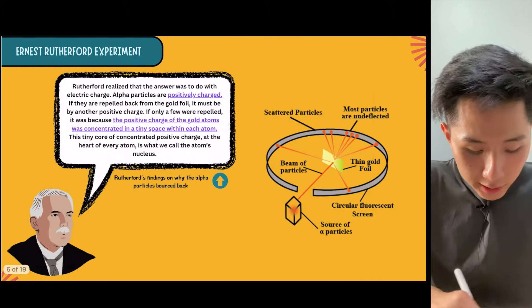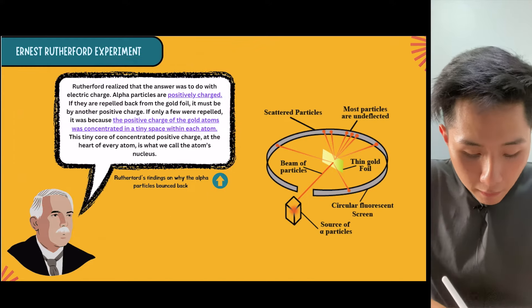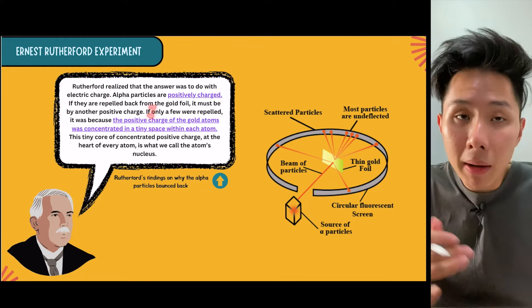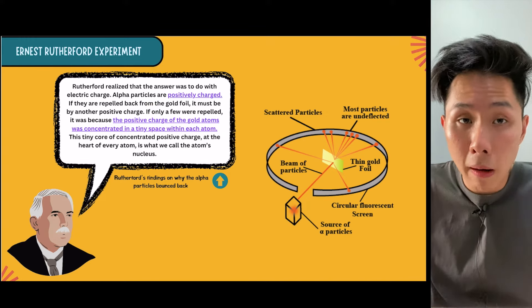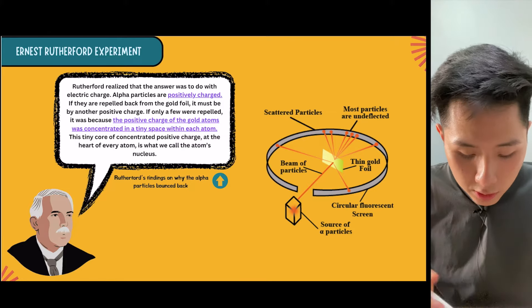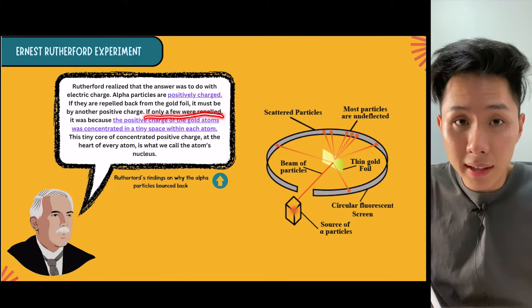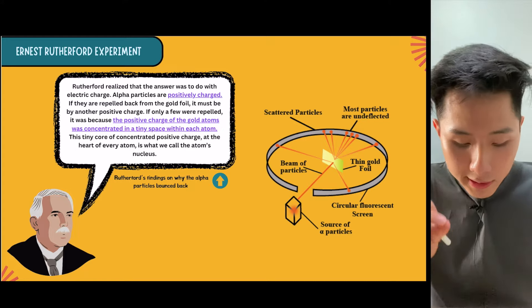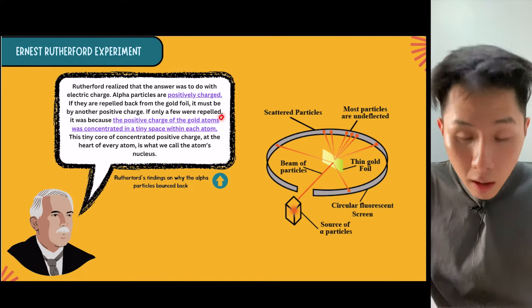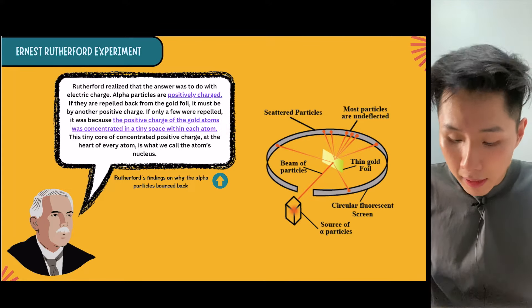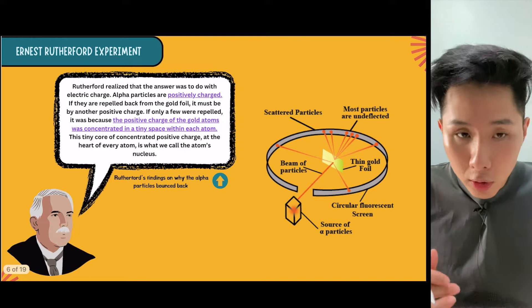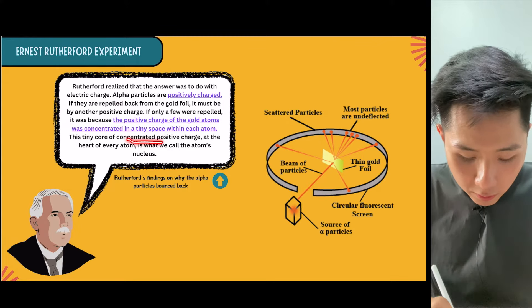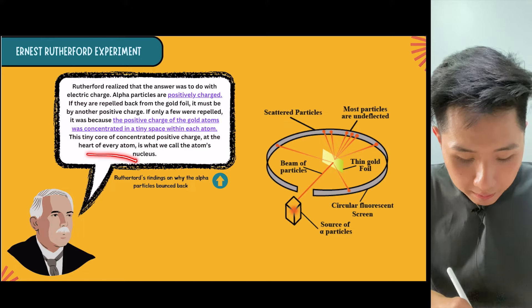What this experiment shows according to Rutherford is that because alpha particles are positively charged with two protons, and if they're repelled back from the gold foil, there must be another positive charge. The experiment shows that only a few were repelled, which indicates that the positive charge of gold atoms was concentrated in a tiny space within the atom. The tiny core of concentrated positive charge at the heart of every atom is what we call today the nucleus.